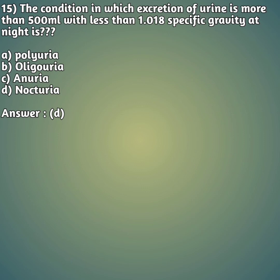Fifteenth question: the condition in which excretion of urine is more than 500 ml with less than 1.018 specific gravity at night — option A: polyuria, option B: oliguria, option C: anuria, option D: nocturia. At night, if specific gravity is less than 1.018, that condition is referred to as nocturia. The right answer is option D.